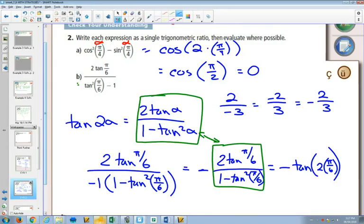2 · π/6 simplifies to π/3. And tan(π/3) = √3, so the answer is -√3.